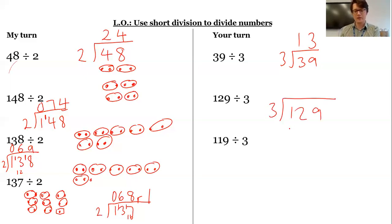129 divided by three. Well, again, I can't make a group of three out of one. So there's no groups of three. I regroup that over here. Three goes into 12. Three, six, nine, 12, four times. Three times four is 12. And I know three times three is nine.